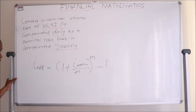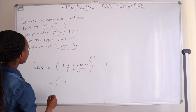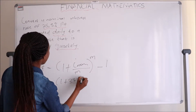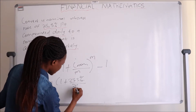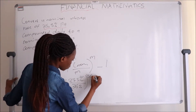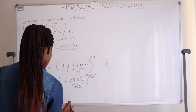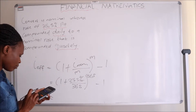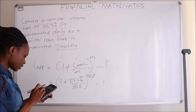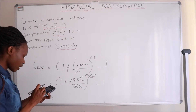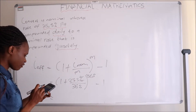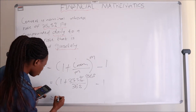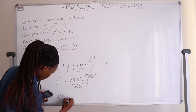We have: I_effective = (1 + 25.5% / 365)^365 − 1, since it is compounded daily, meaning 365 days. The result is 0.2903, and multiplying by 100 gives us an effective interest rate of 29.03%.